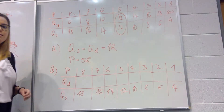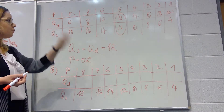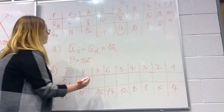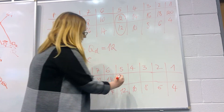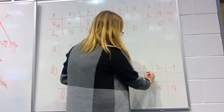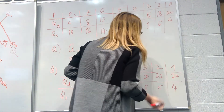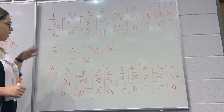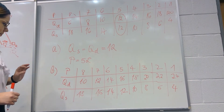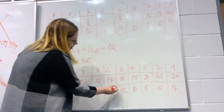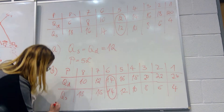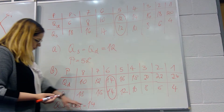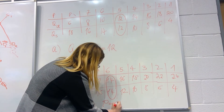Quantity supplied stays the same because the question doesn't specify anything about supply. Quantity demanded increases by four at every price. So the new quantities demanded are: 10, 12, 14, 16, 18, 20, 22, and 24 million. The new equilibrium is where quantity demanded equals quantity supplied — which is now 14 million units. The price at 14 million units is £6, so the new equilibrium price is £6.